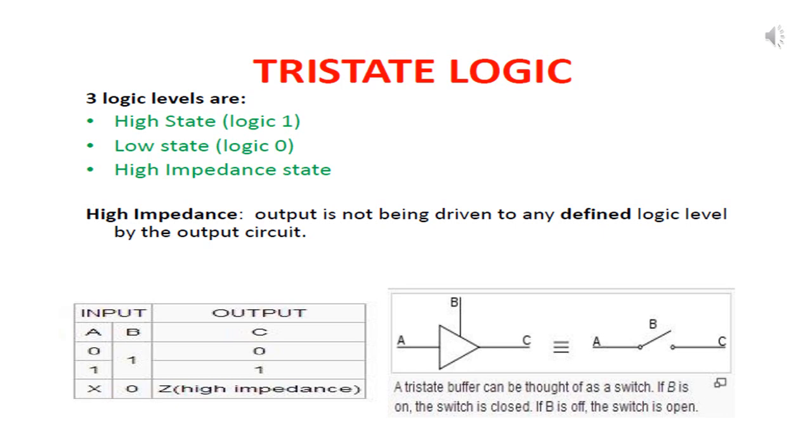The logic 1 is a plus 5 voltage. Second one is a low state. The low state is basically called as logic 0. The logic 0 refers to the zero voltage.